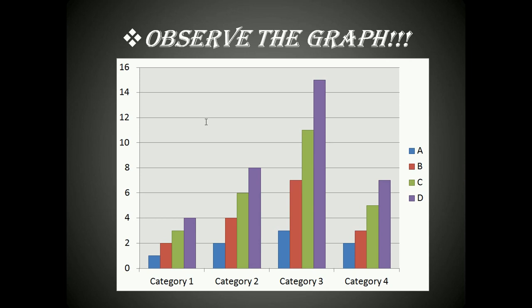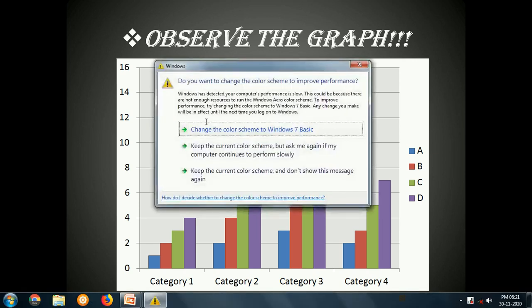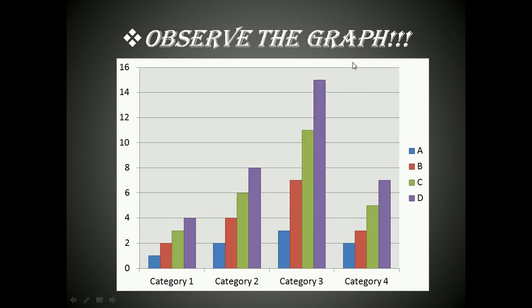To understand or guess the name of the topic, let us observe the graph shown in the picture. There is a bar graph — all of you know about bar graphs. There are four categories mentioned here: category one, category two, category three, and category four. If you observe carefully, out of these four, one category is completely different from the other three. What is that category?